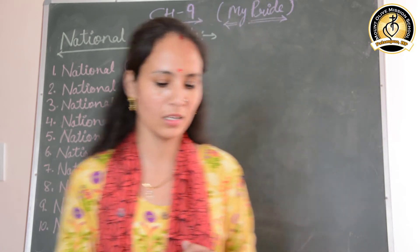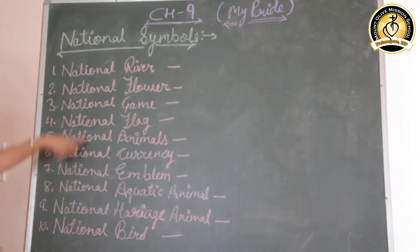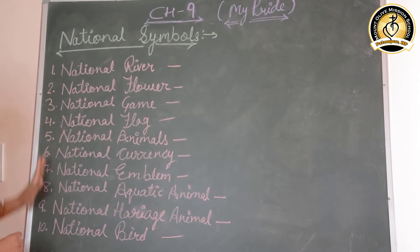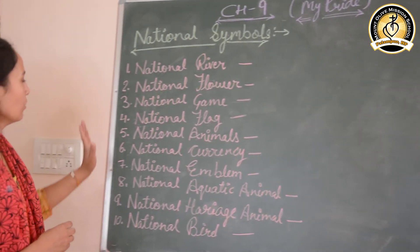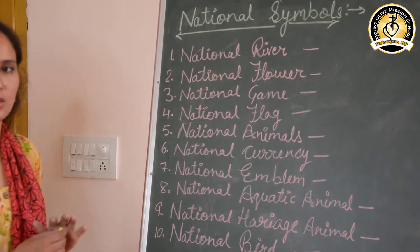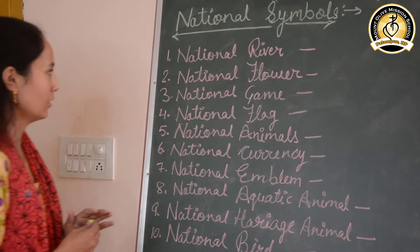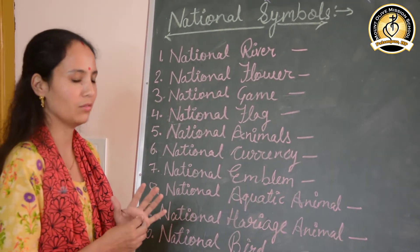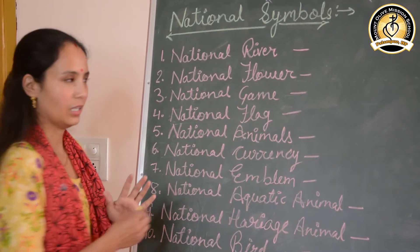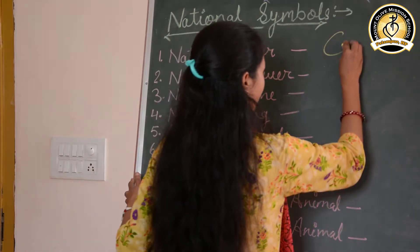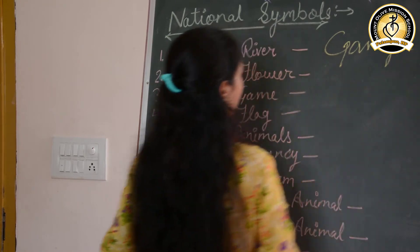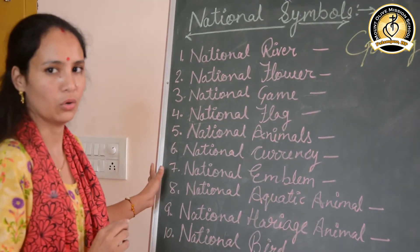Let's see some national symbols. Firstly, the national river. Which is our national river? Try to give the answer. Very good — Ganga! Ganga is our national river.